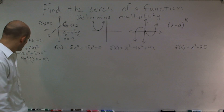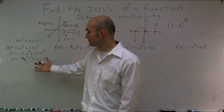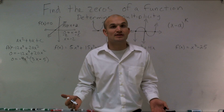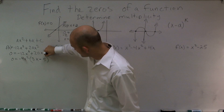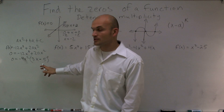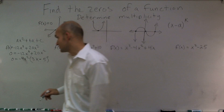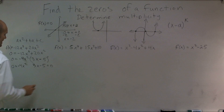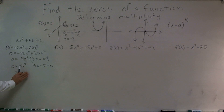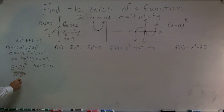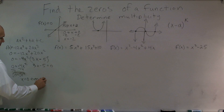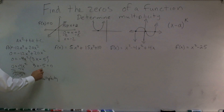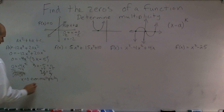So I have 0 equals negative 4x squared times 3x minus 5. Now we have two factors multiplied by each other giving us 0. We look at the exponents of our two factors to determine if they're even or odd. The 3x minus 5 has no exponent, so we can say it has a 1, which makes it odd multiplicity. The negative 4x squared is going to have an even multiplicity. Setting both factors equal to 0 and solving, my zeros are x equals 0 with even multiplicity, and x equals 5 thirds with odd multiplicity.